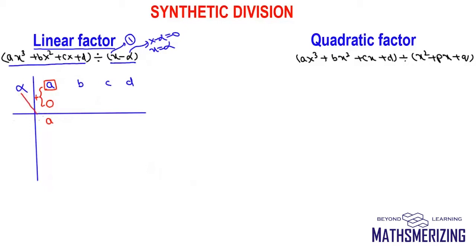Now I will multiply a with alpha and put the result below b, which is a·alpha. Then I will add them to get a·alpha + b. Again I will multiply alpha with (a·alpha + b), put the result there, and continue doing that until we get the last term.